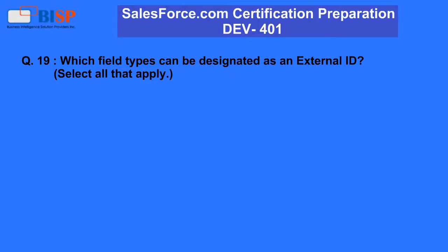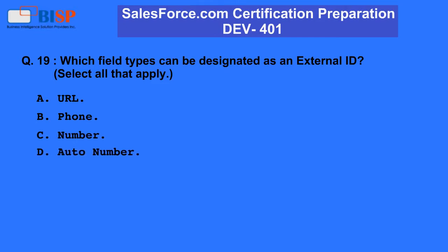Question 19: Which field types can be designated as an external ID? A. URL. B. Phone. C. Number. D. Auto number. E. Email. F. Text.